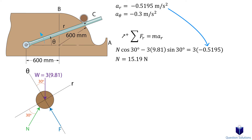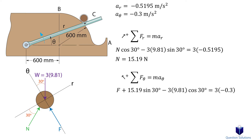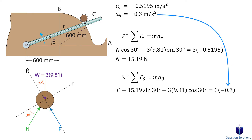Let's write our equations of motion. For the radial components, we have the radial component of the normal force and the radial component of the weight, equal to the mass of the can multiplied by the radial acceleration. Let's solve for the normal force. Now we can write an equation for the transverse components: the applied force, the transverse component of the normal force we just found, and the transverse component of the weight, all equal to mass multiplied by the transverse acceleration. Let's solve for the force — and that's our answer.